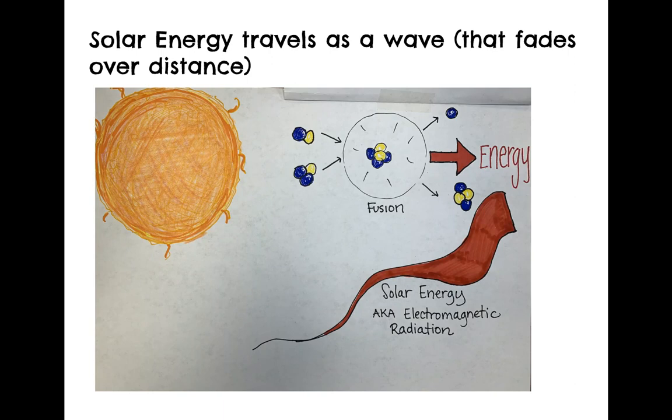This energy known as solar energy, also as electromagnetic radiation, will travel as a wave through space, but it fades over a distance. So this is kind of like sound. Sound travels as a wave and fades over a distance. But unlike sound, electromagnetic radiation or solar energy travels as a wave that does not need matter. And that is why it can travel through space.